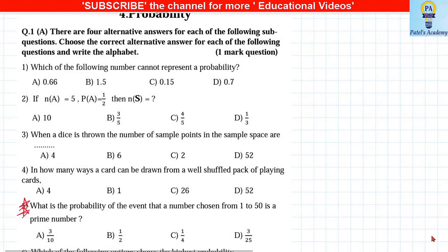Which of the following cannot be the probability? The answer is B, 1.5, because the property of probability is 0 ≤ P ≤ 1. For any event, probability can be 0, 1, or anything in between. It cannot be less than 0 nor more than 1.